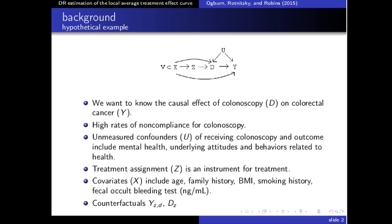For example, U might be health-seeking behaviors or health-avoiding behaviors. Luckily, in this hypothetical example, the treatment assignment Z is unconfounded with the outcome, at least conditional on measured covariates, and therefore we can use Z as an instrument for the treatment in order to recover the causal effect of colonoscopy on colorectal cancer.